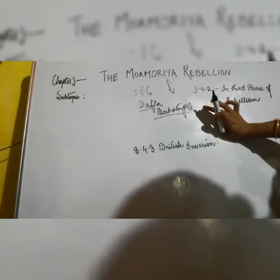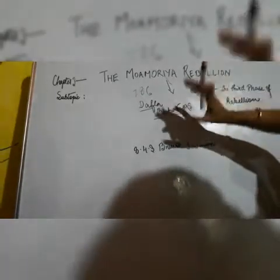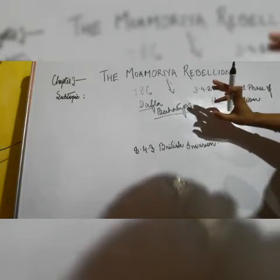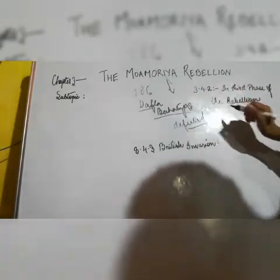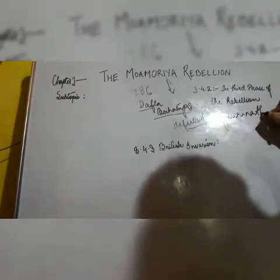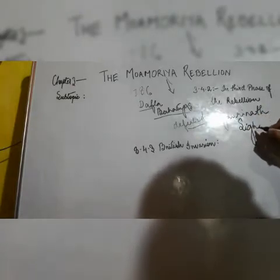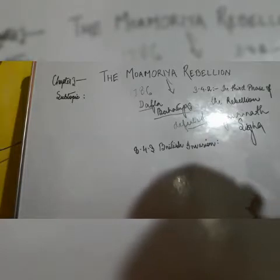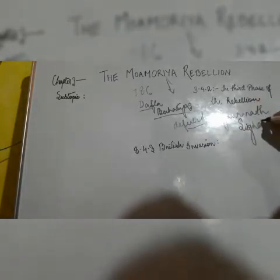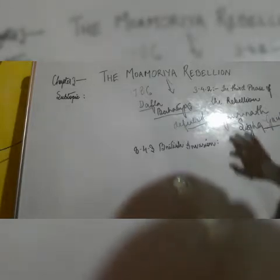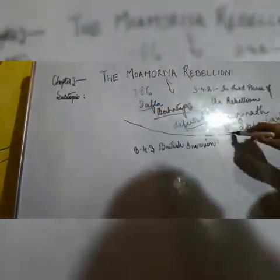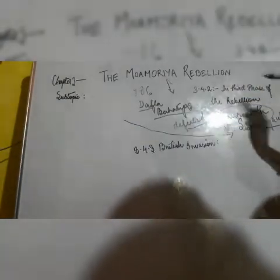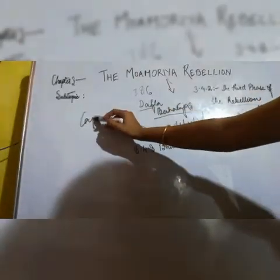Gaurinat Singha tried to defend his kingdom, but this combined group defeated the royal army. As a result, Gaurinat Singha fled from his capital to Guwahati. With the king gone, the Moamorias once again captured the capital.